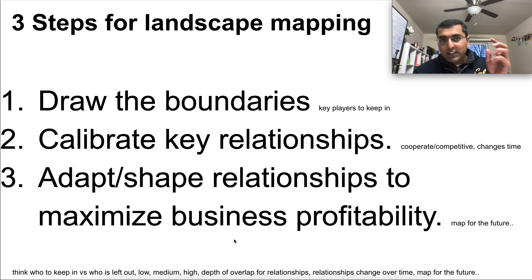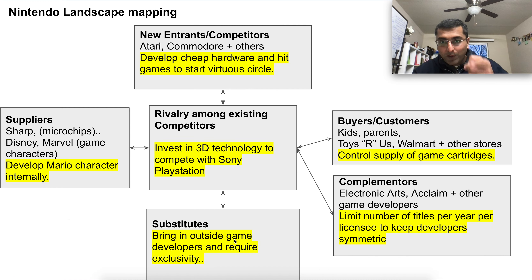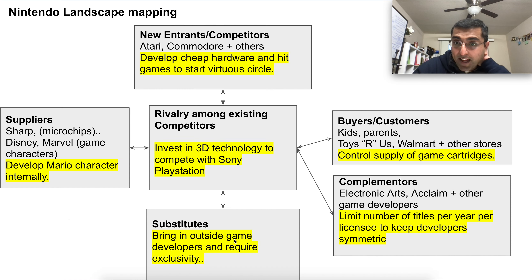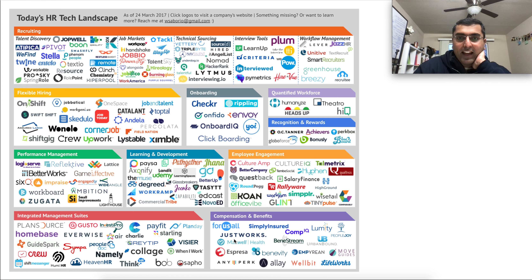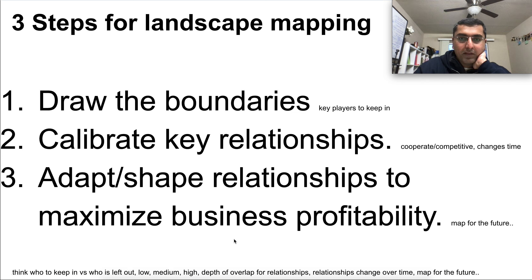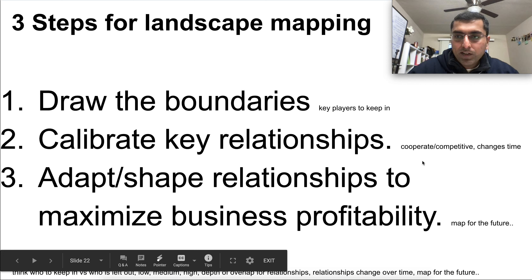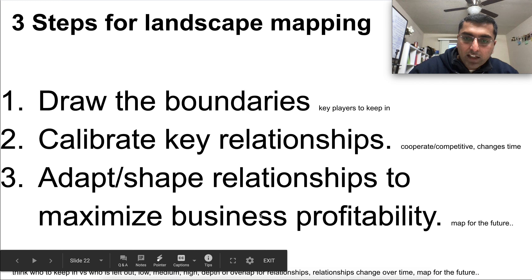The three steps are: first, figure out the key players — Toys R Us, kids, Electronic Arts, Atari, Sharp. Second, calibrate your relationships — are these competitors, rivals? Put them in the right bucket. Third, adapt and shape relationships based on the decisions highlighted in yellow — the steps you'll take to achieve the future you desire as a company. Once you identify the key players, you figure out the competitive versus cooperative landscape and how it changes over time, then map out the future based on the decisions you take.